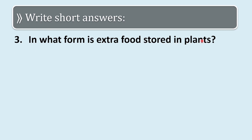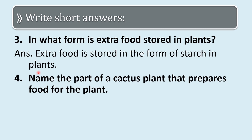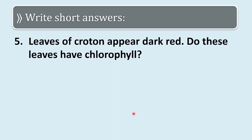Third question: in what form is extra food stored in plants? Extra food is stored in the form of starch in plants. Fourth question: name the part of a cactus plant that prepares food. Food is made in the green stem of a cactus, because cactus plants do not have any leaves, so they use their stems for preparing food.